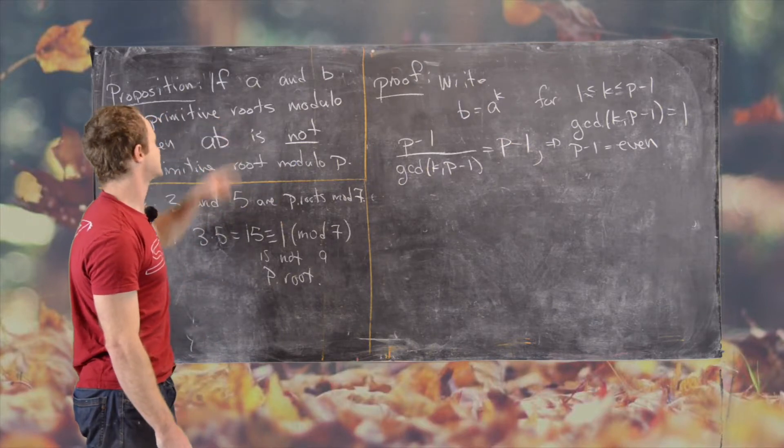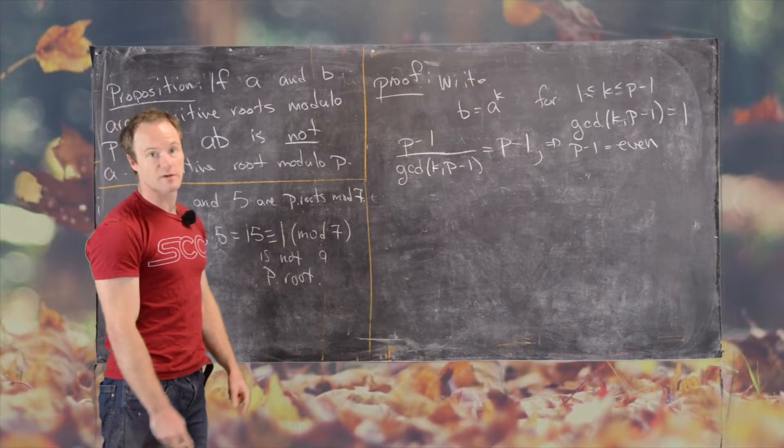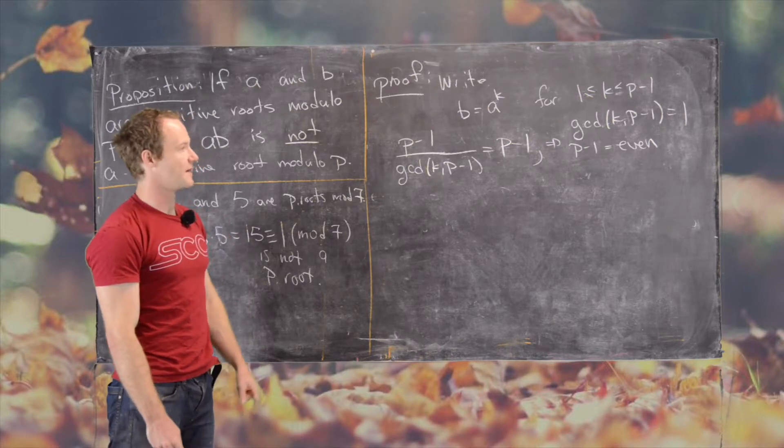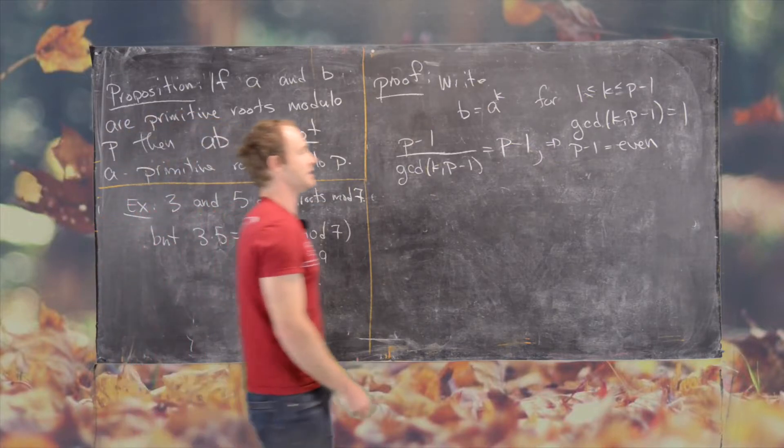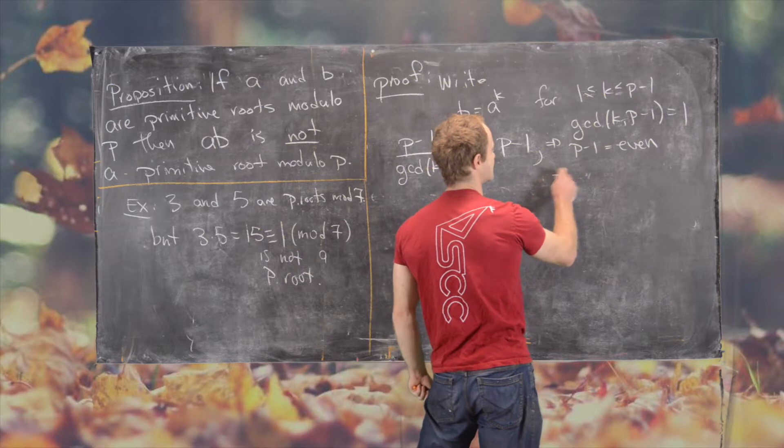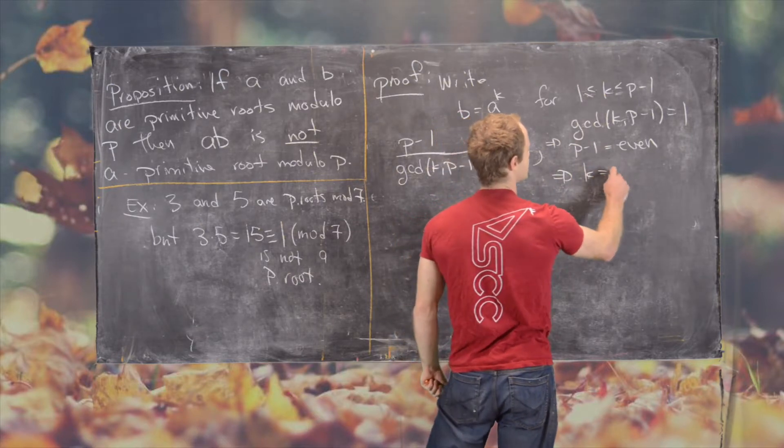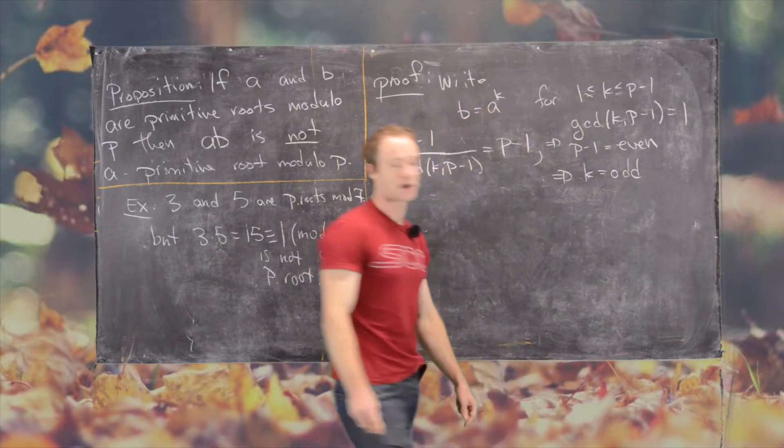So in fact, in this case, we probably want this to be an odd prime. So that means P minus 1 is even. But then if this GCD is 1, that tells us that K is odd.